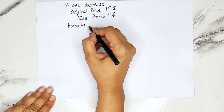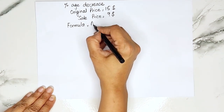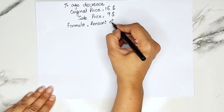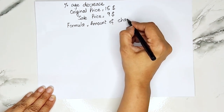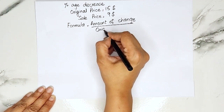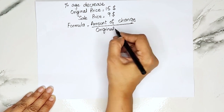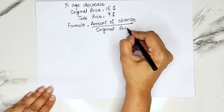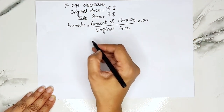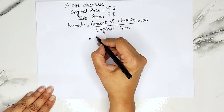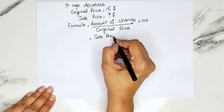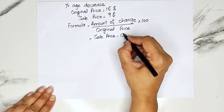First of all, we will be using the formula method. In the formula method we will be using a formula: amount of change divided by the original price, multiplied by 100. The amount of change is the new price — that is the sale price — minus the original price.